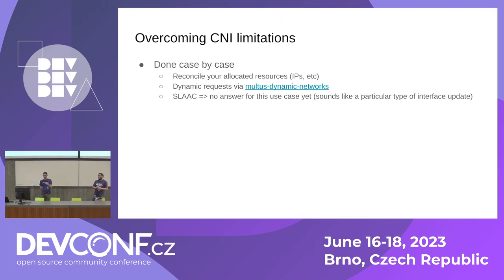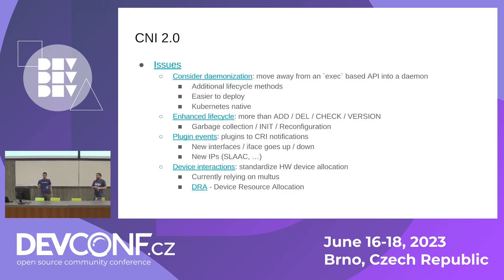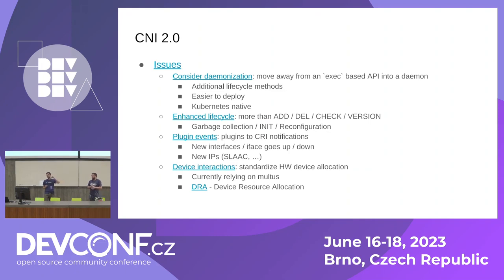Not everything is bad — there's the upcoming CNI 2.0. As I said, right now it's just a list of issues, but you can comment and help raise their priority. Among the things being considered: daemonization — instead of being a binary on the host filesystem invoked by the kubelet, CNI will run in a pod managed by a daemon set. That's much better. It helps add lifecycle methods, it's easier to deploy, and of course, it's Kubernetes-native.